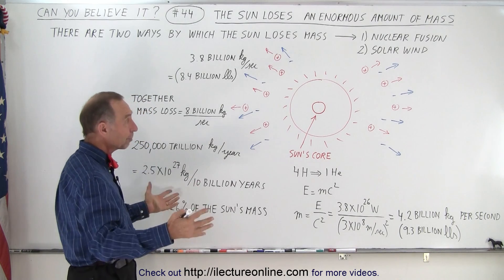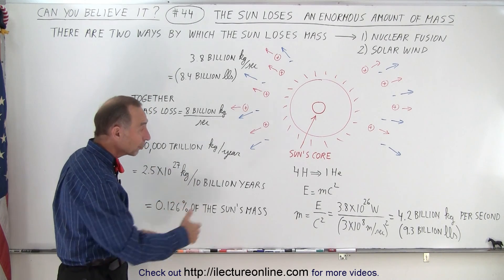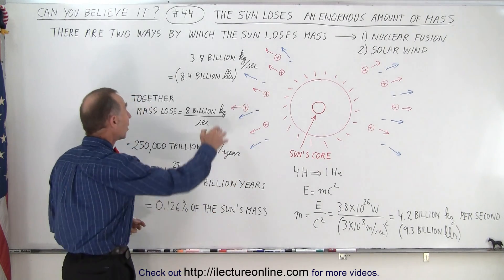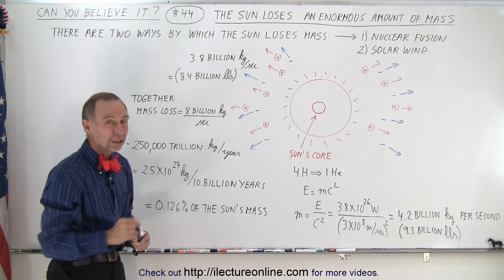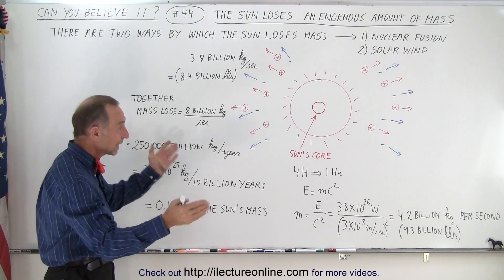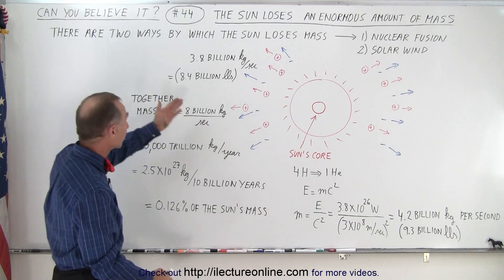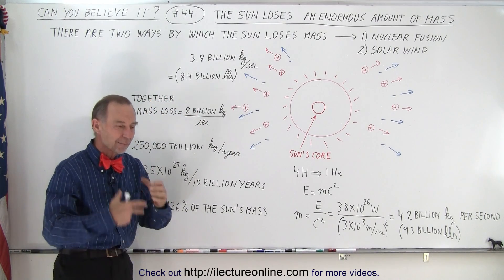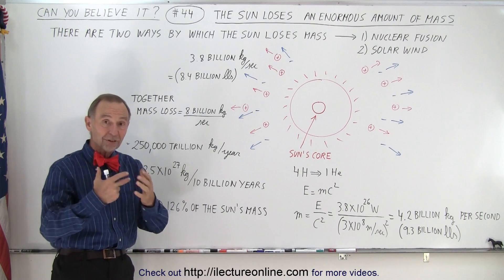But how many particles are being sent out every second? Almost the same amount of mass that was converted to energy in the nuclear fusion process, about 3.8 billion kilograms every second. That's about 8.4 billion pounds. Together, 4.2 billion plus 3.8 billion gives you about 8 billion kilograms of matter that the sun loses every single second.